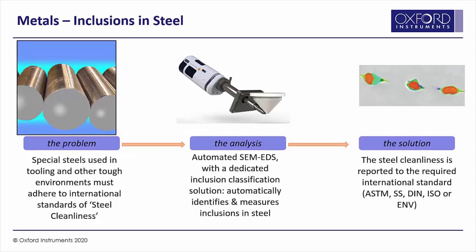Our next example is all to do with the manufacture of steel. Non-metallic inclusions within steel are an inherent consequence of the steel-making process, but their presence can cause problems in terms of steel performance, particularly if there are too many or if they're too big. As a result, they're quite tightly regulated and reported to by various different international steel cleanliness standards. These inclusions can be down to a scale of a micron or smaller, so they really do need to be studied in the SEM. We can run an automated feature analysis using dedicated classification schemes for these non-metallic inclusions and get reports telling us exactly what their content is and their effect on the steel.